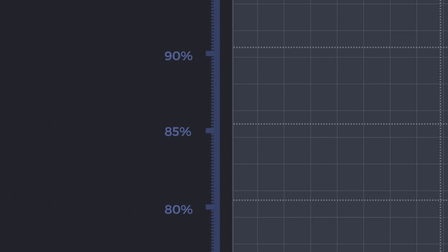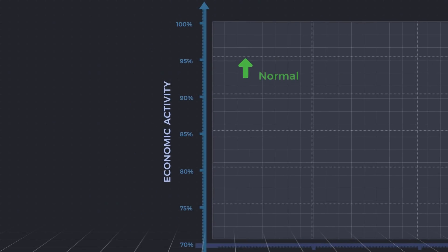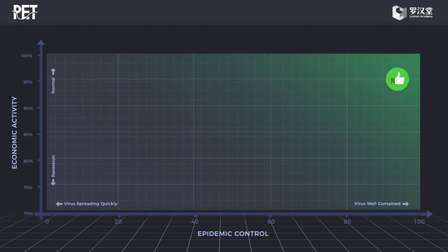The vertical axis, or y-axis, shows the level of economic activity measured using mobility data. The higher the vertical axis, the closer to economic normalcy. The top right corner of the chart is the ideal state for any country battling the coronavirus, signifying the highest degree of virus containment and economic normalcy.